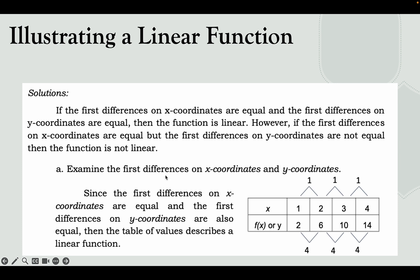In example A, examining the differences: for x, 4−3=1, 3−2=1, 2−1=1 — all equal. For y, 14−10=4, 10−6=4, 6−2=4 — also all equal. Since both first differences are equal, the table of values describes a linear function.